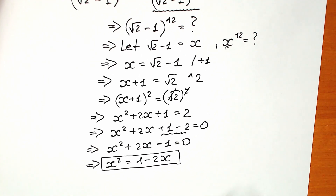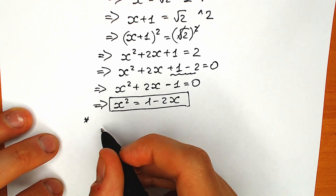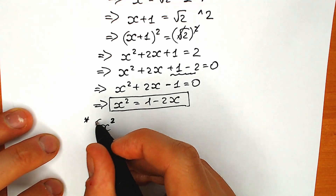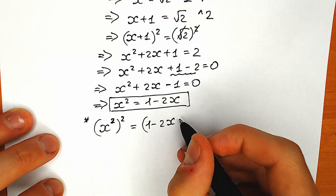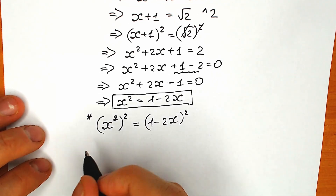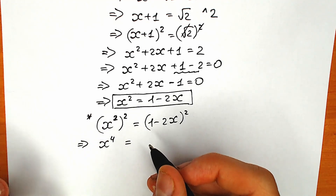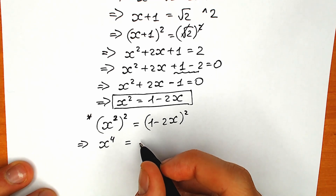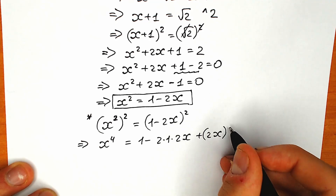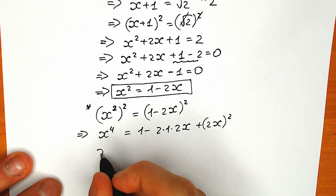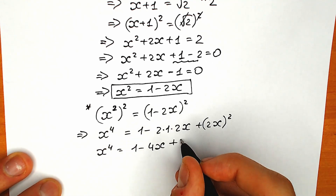First of all, let's raise both sides to the power 2, so we will have x to the power 4. We raise x squared to the power 2, which equals 1 minus 2x raised to the power 2. As a result on the left side we have x to the fourth power. On the right side we expand: 1 minus 2 times 1 times 2x plus (2x) squared, giving us x to the fourth power equal to 1 minus 4x plus 4x squared.